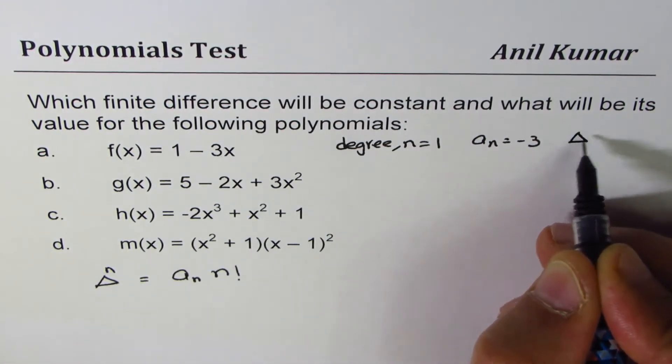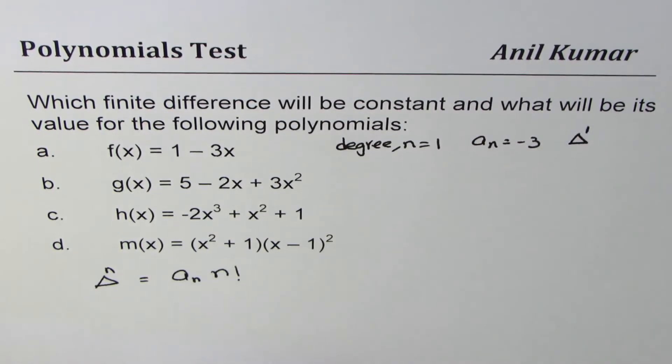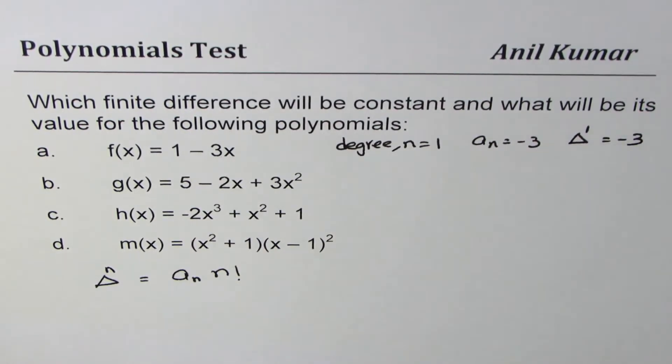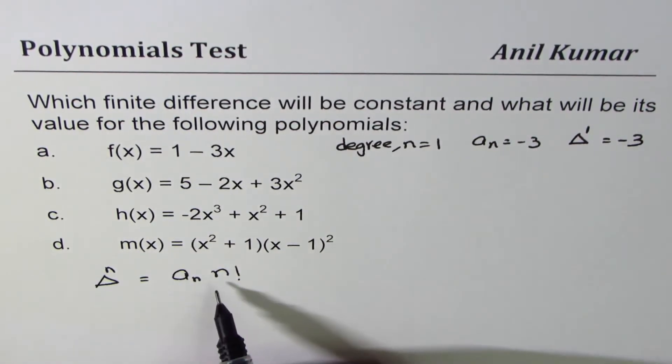So we say first finite difference will be constant and the value will be the slope itself, which is equals to minus 3. You get the idea. You could use this formula also.